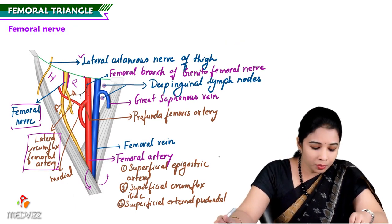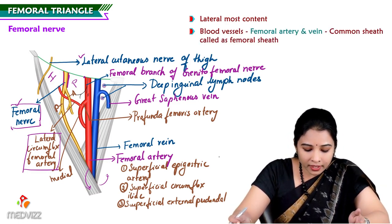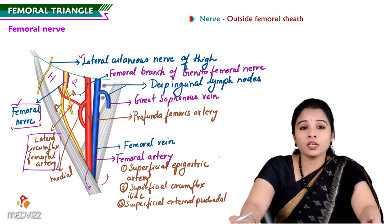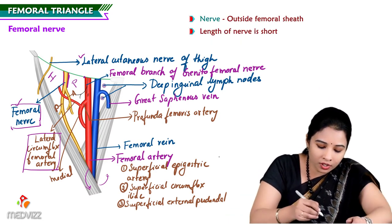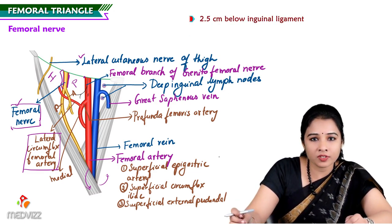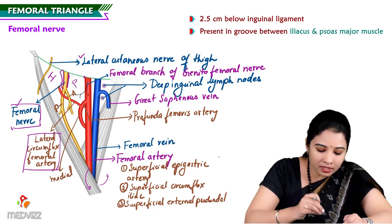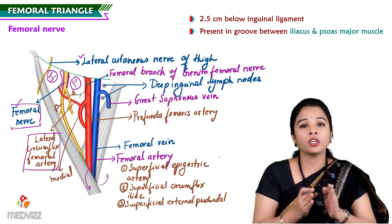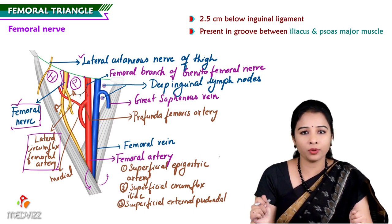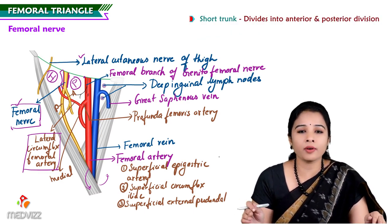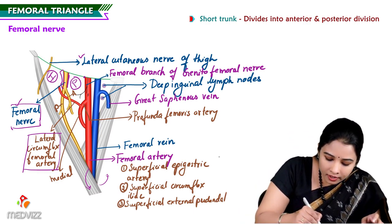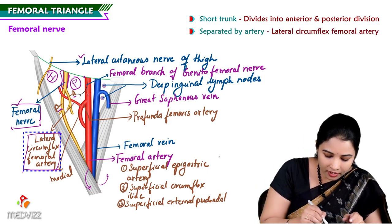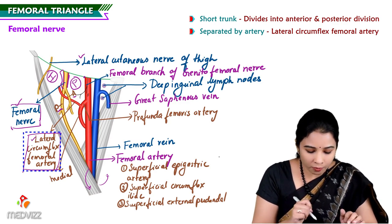The femoral nerve is the lateral-most content in the femoral triangle. The femoral artery and vein are present in the femoral sheath, whereas the nerve is outside the femoral sheath. The length of the femoral nerve is very short — only 2.5 centimeters below the inguinal ligament — and it lies in the groove between the iliacus and psoas major. It immediately divides into anterior and posterior divisions, which are separated by the lateral circumflex femoral artery, a branch of profunda femoris.